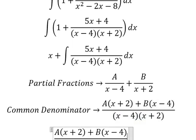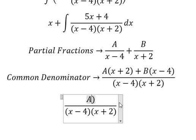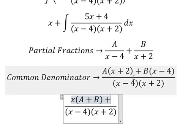Now we need to arrange based on the x term. For x, we have A plus B. For the constant, we have 2A minus 4B.